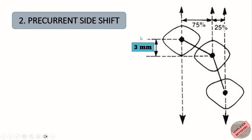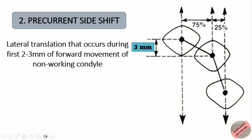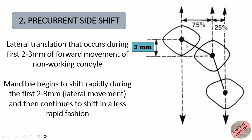Second is pre-current side shift. This is the lateral translation that occurs during the first 2 to 3 mm of forward movement of the non-working condyle. The mandible begins to shift rapidly during the first 2 to 3 mm and then continues to shift in a less rapid fashion.